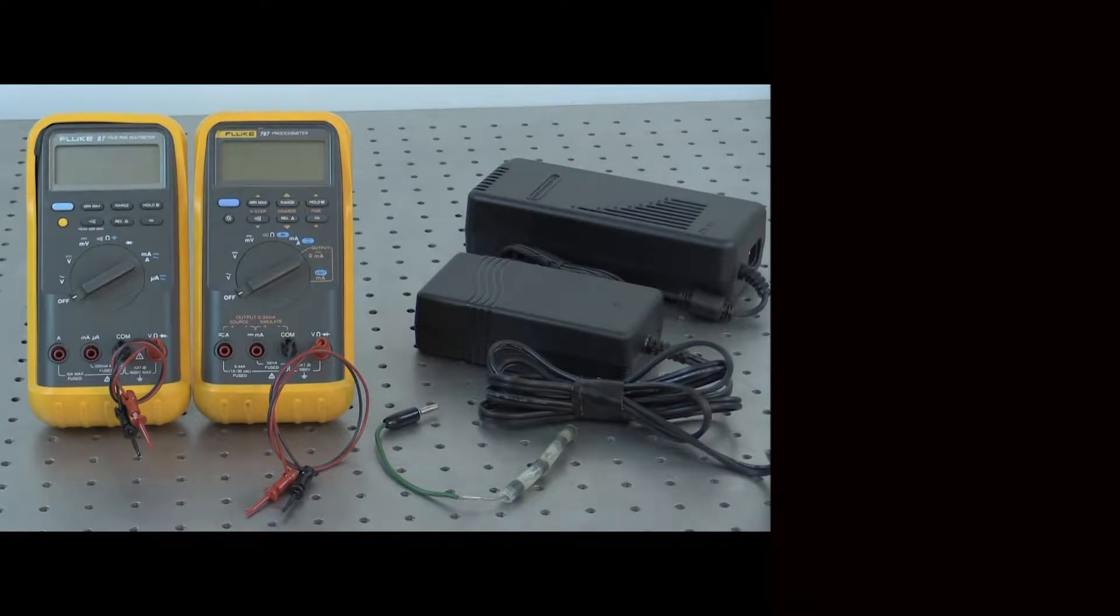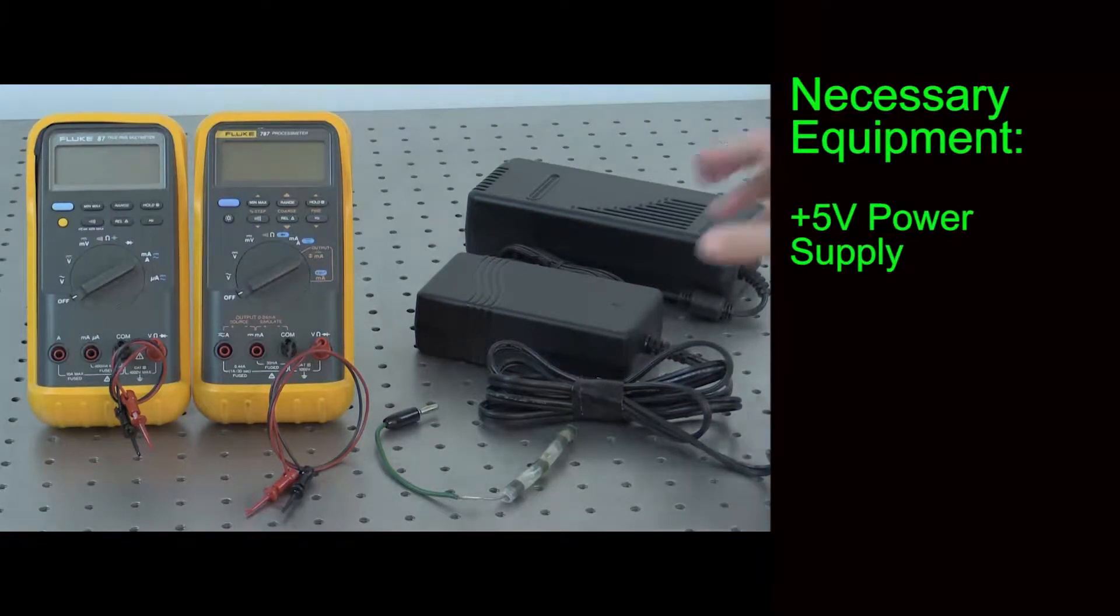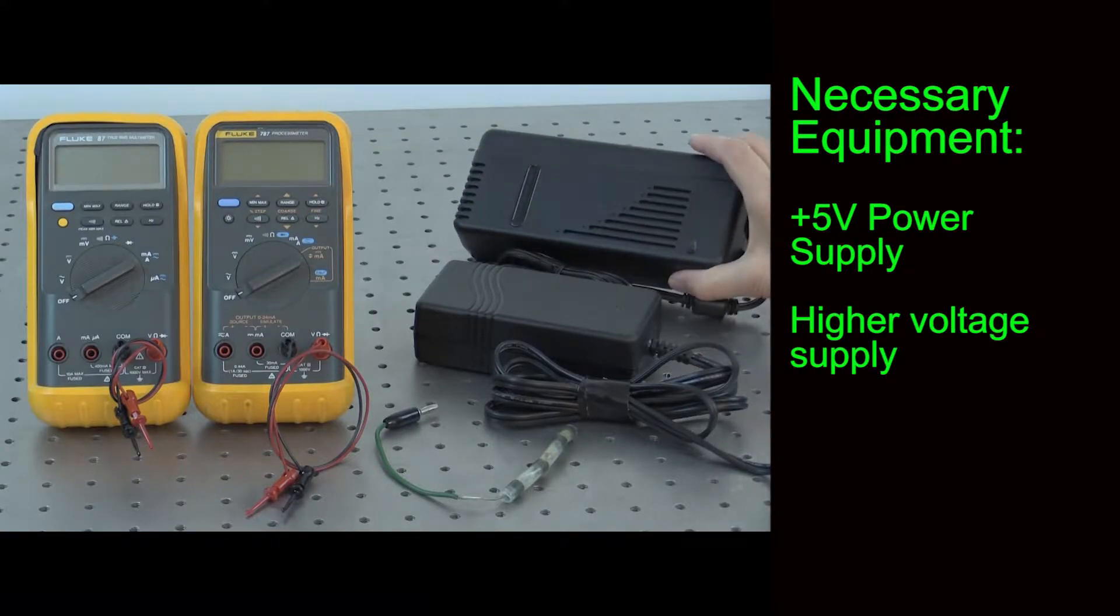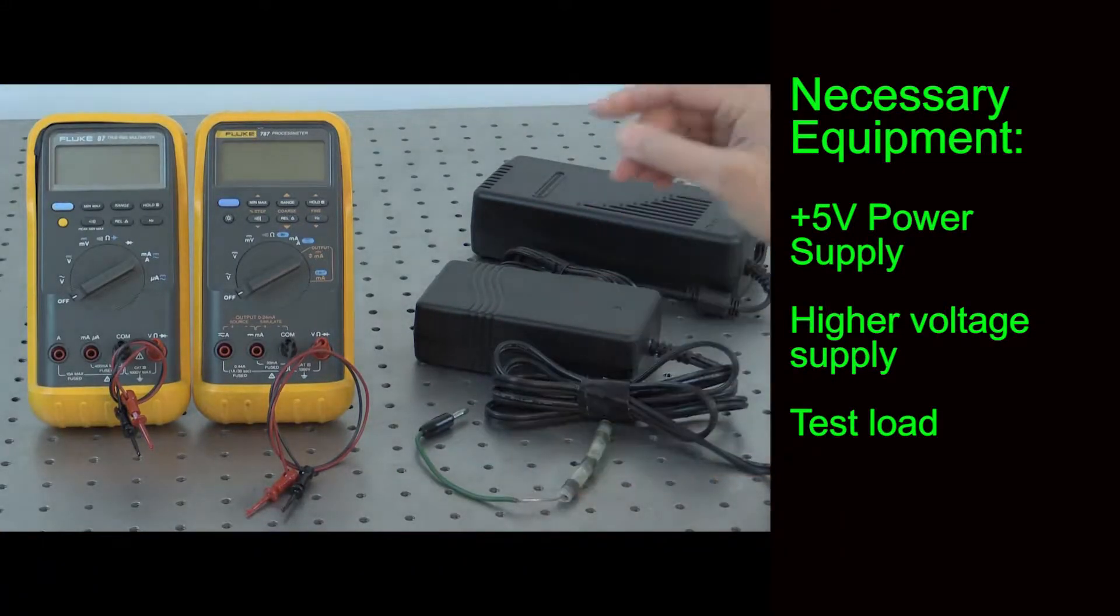Once the safe power supply voltage has been chosen, necessary equipment includes a plus 5 volt supply, a higher voltage power supply if needed, a test load, and a multimeter.